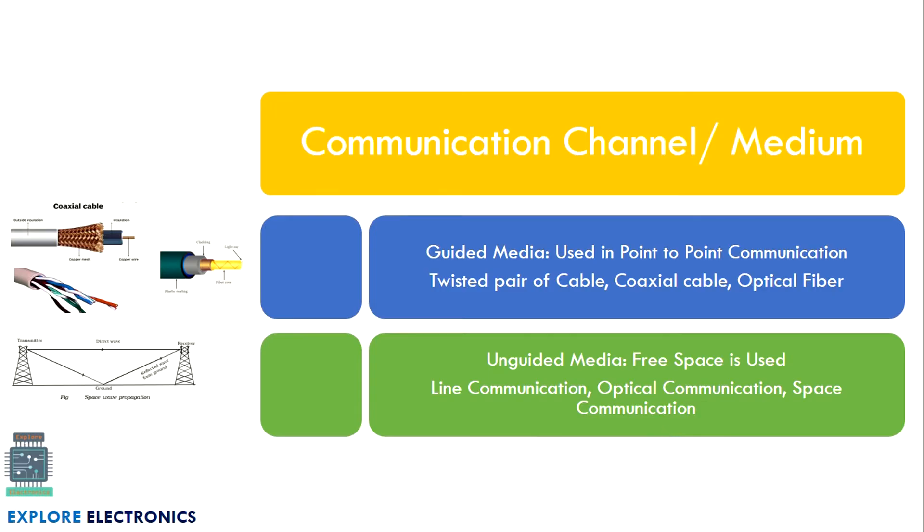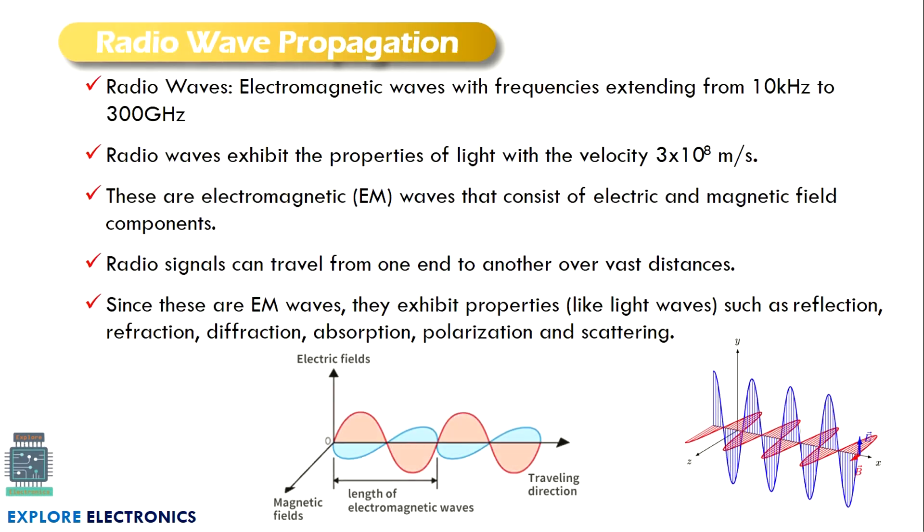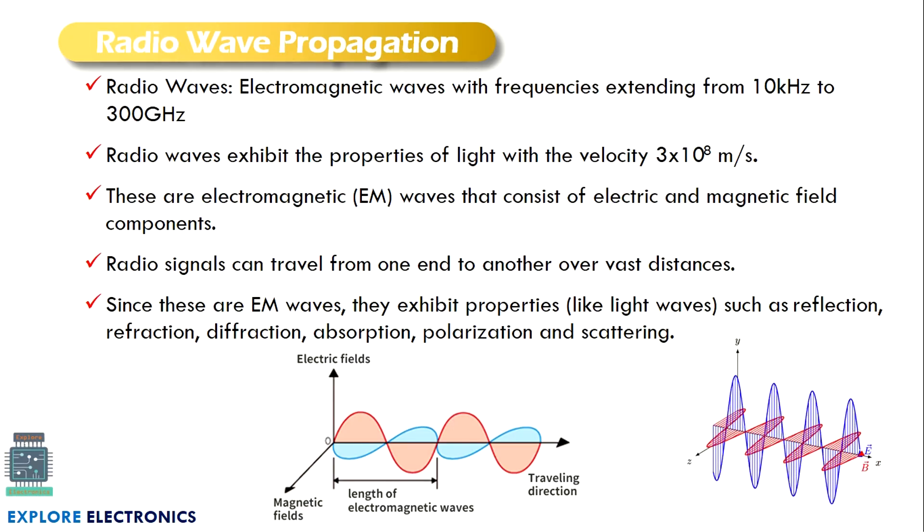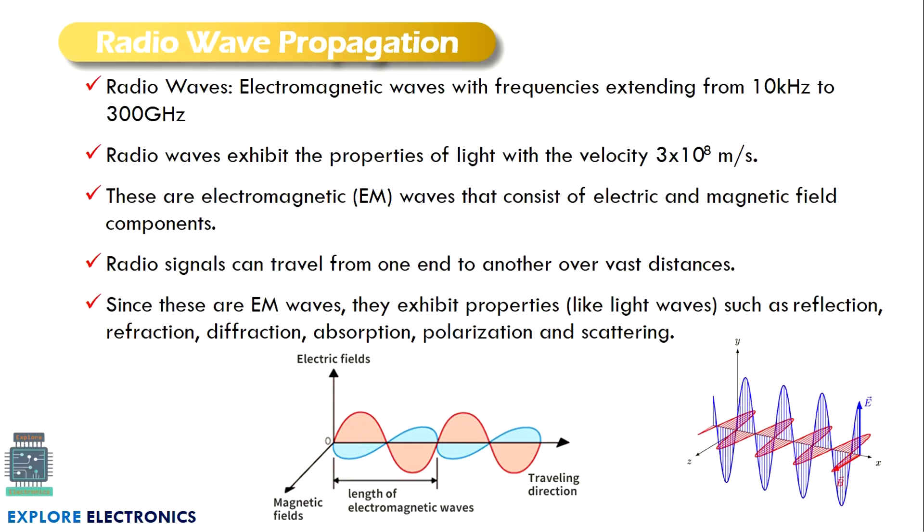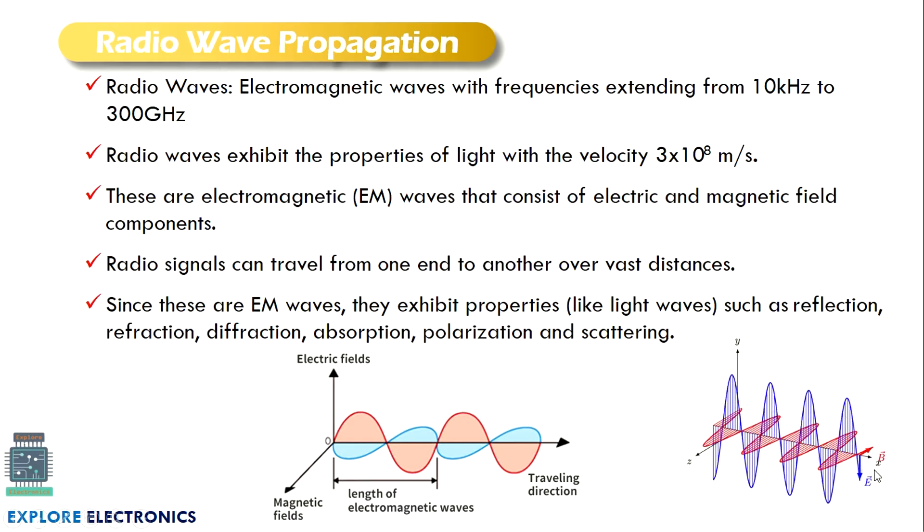Let us see what radio waves are and how communication happens in space. This is radio wave propagation. In radio wave propagation, we use radio waves that exhibit the properties of light. These waves are called electromagnetic waves consisting of electric field as well as magnetic field. You can see here in this diagram the signal is traveling in this direction.